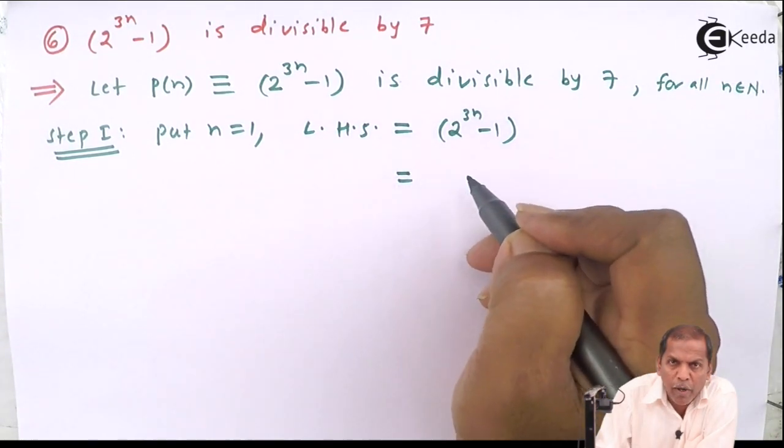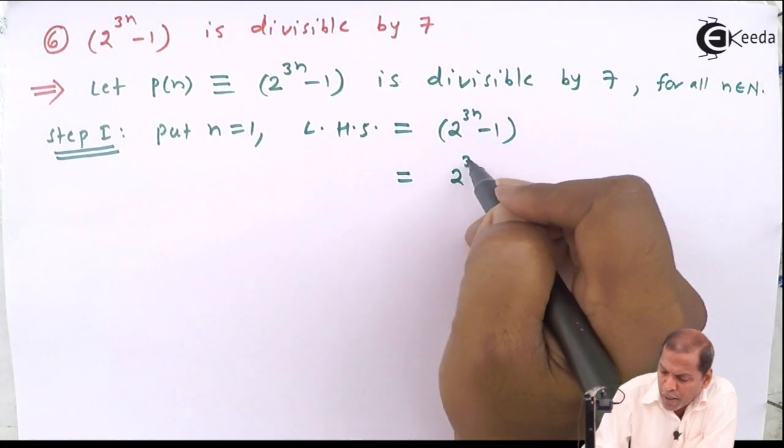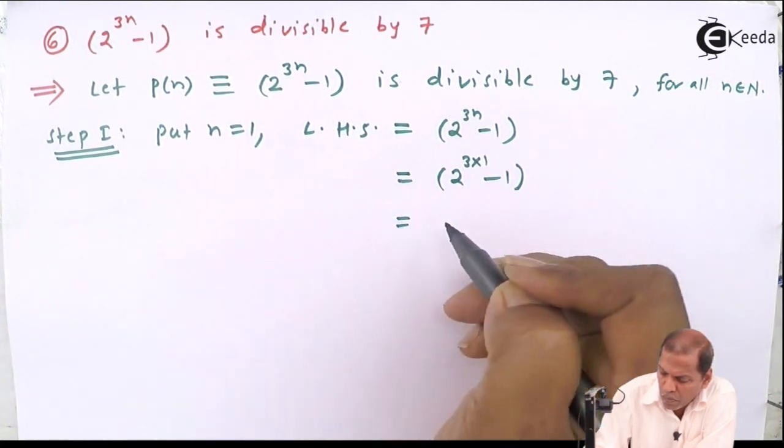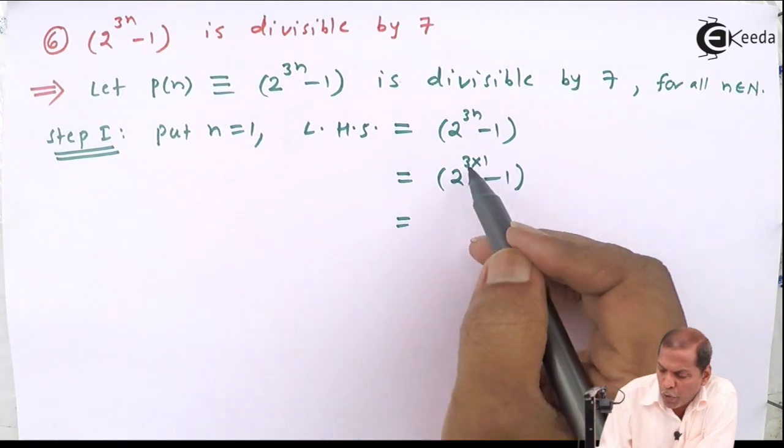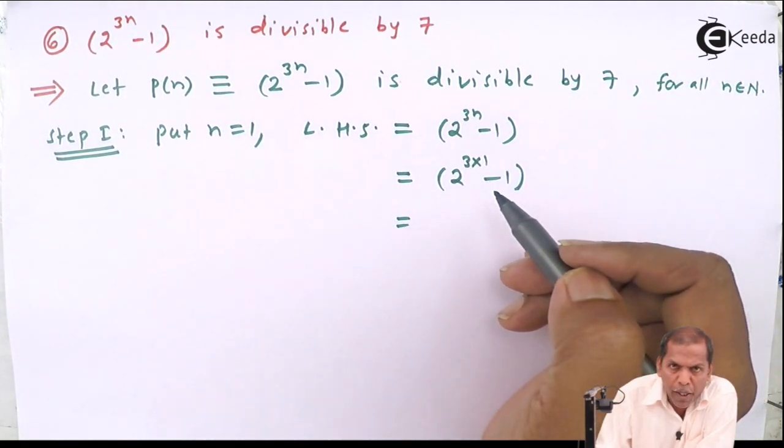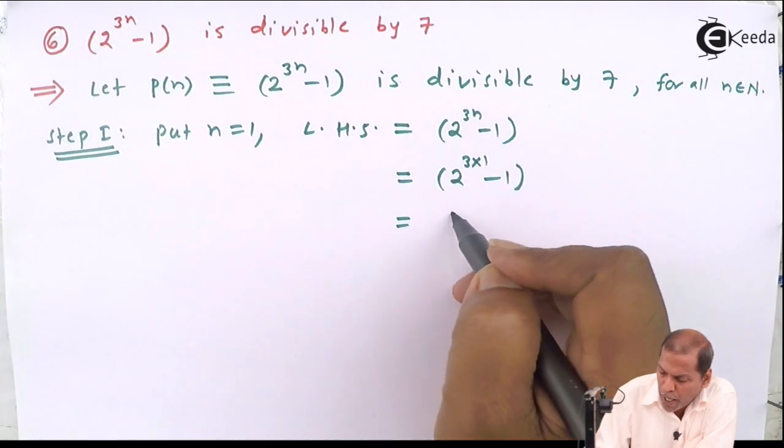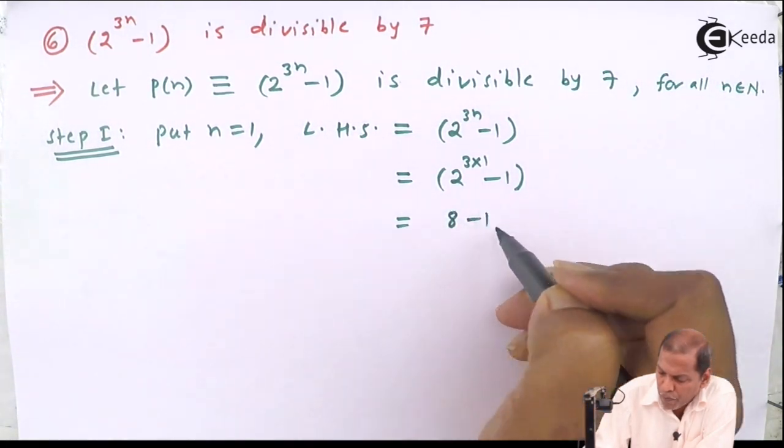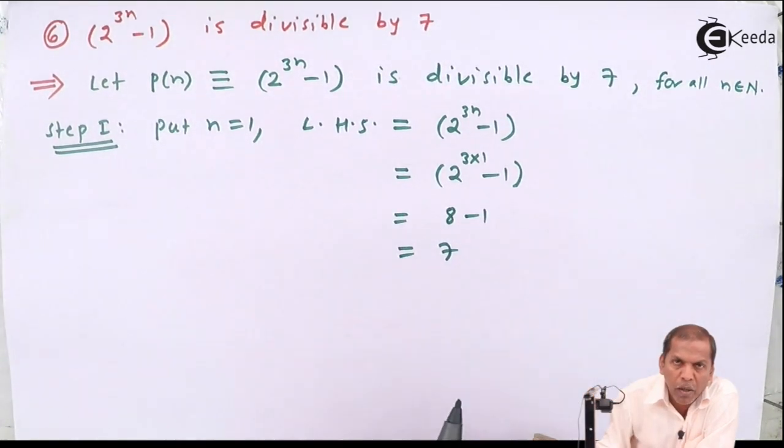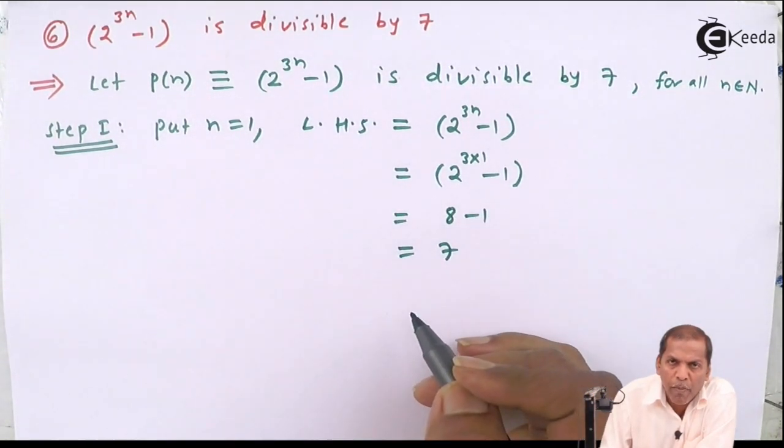That equals 2 raised to 3 into 1 minus 1. So 3 into 1 gives 3, and then 2 raised to 3 means 2 cube, that gives us 8 minus 1, which equals 7 which is divisible by 7.